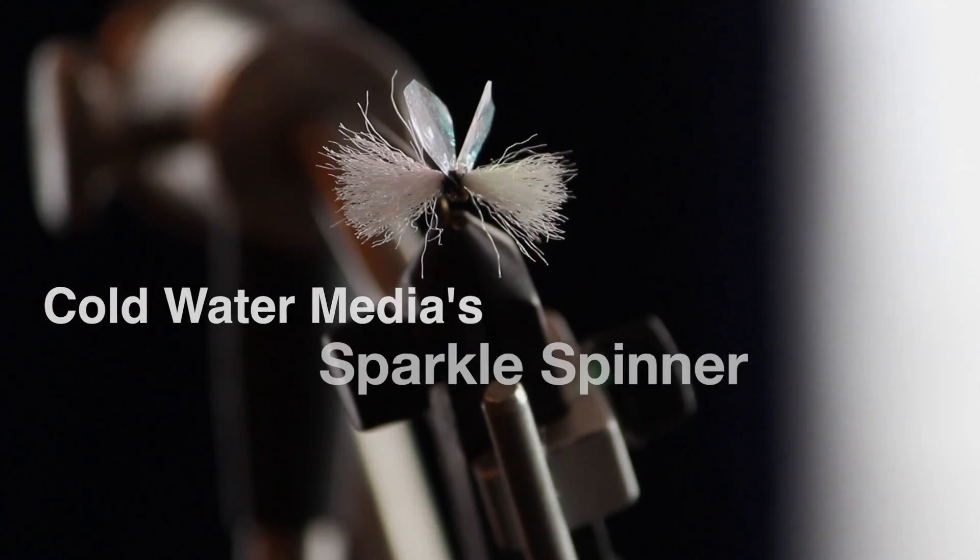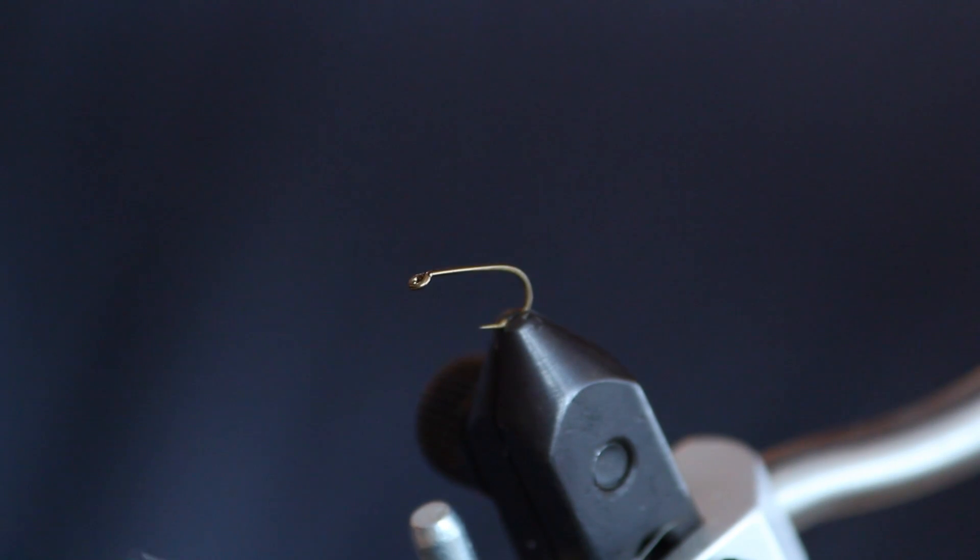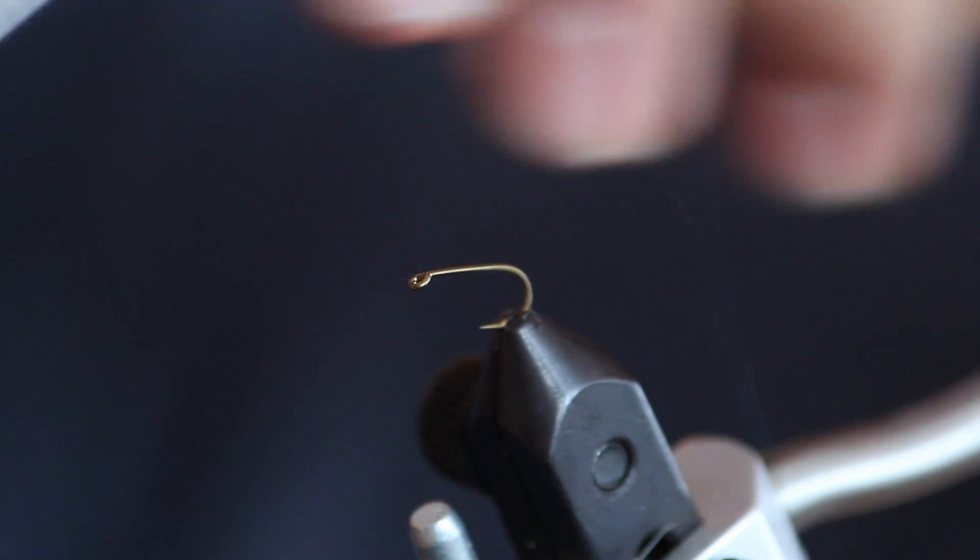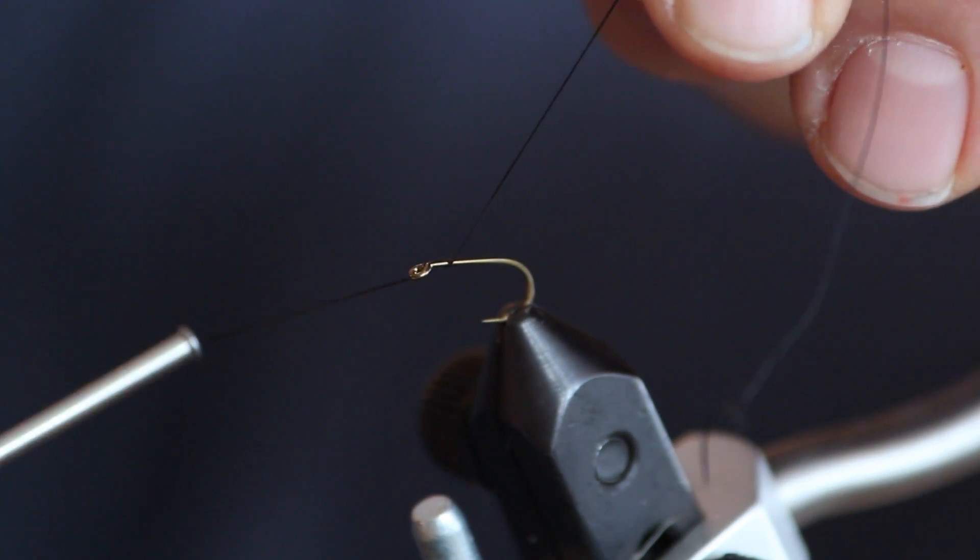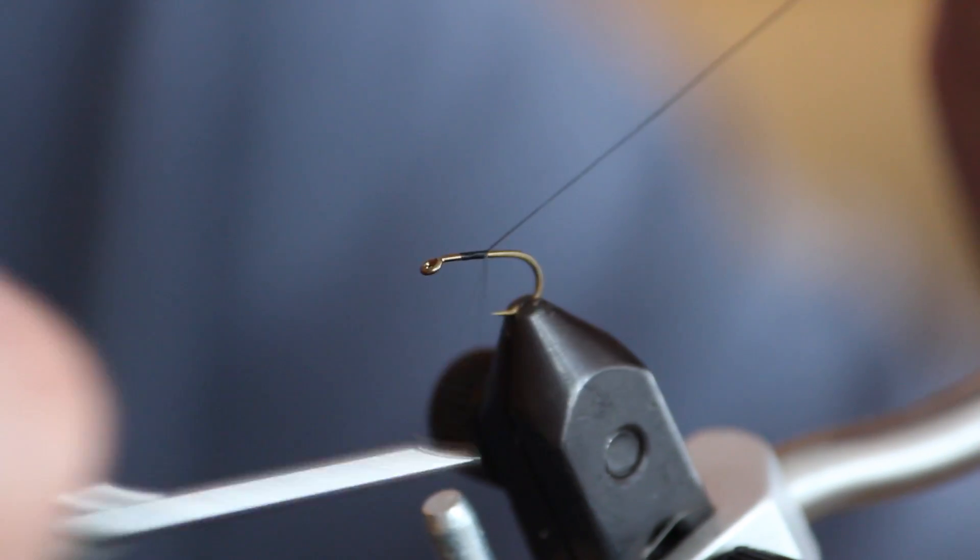Today we'll be tying CWM's Sparkle Spinner. Start off with a size 14 dry fly hook. Use UTC black 70 denier thread.